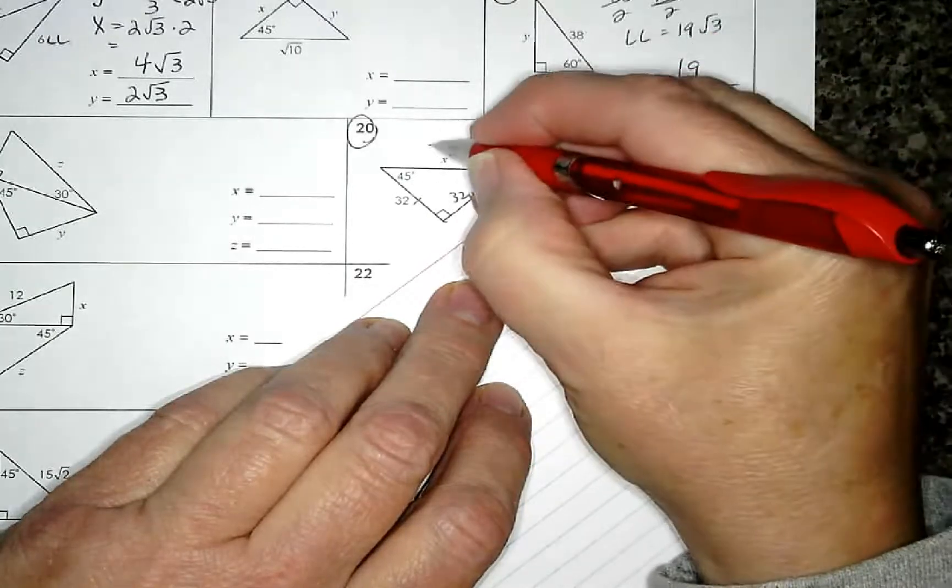Now we can come over to this side and I know that this triangle has a hypotenuse of 32. So the hypotenuse is 32, that means the short leg is half of that, which is 16, and the long leg, which is opposite the 60, is 16 square root of 3. So I'd have 32 square root of 2, I'd have 16 square root of 3, and I would have 16.